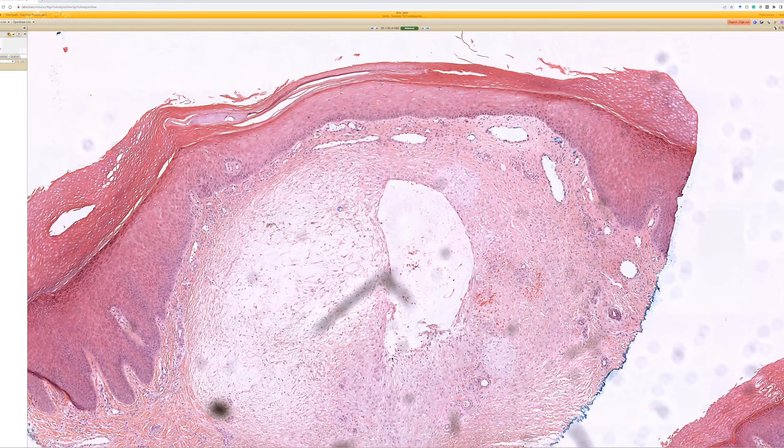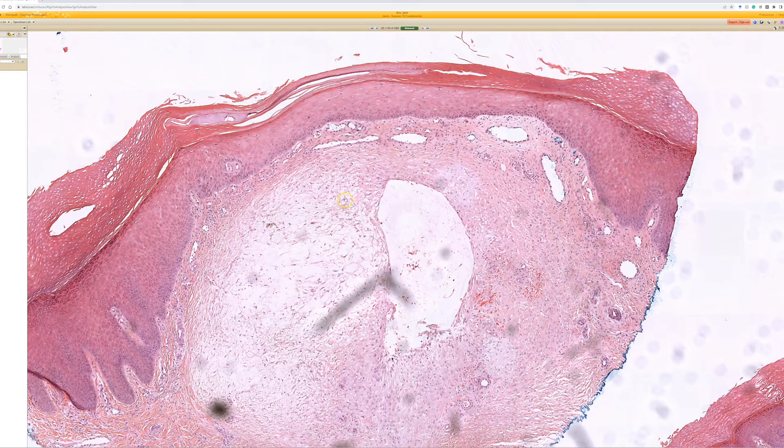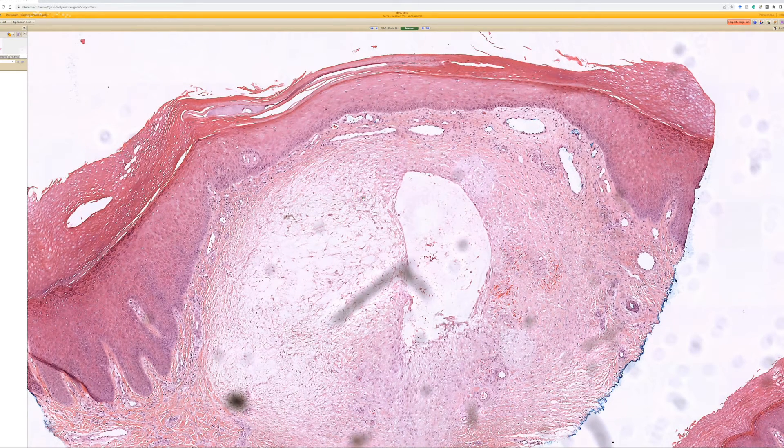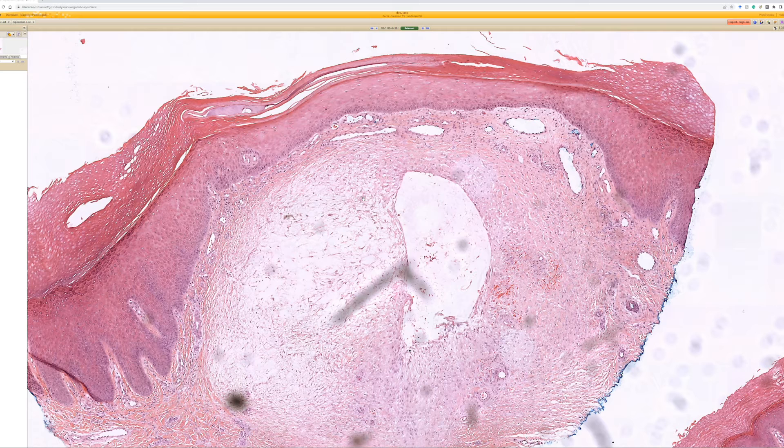So this is digital mucus cyst, digital mucoid cyst, whichever you like to call them. And they are little clearish papules that arise on the proximal nail fold, the dorsal surface where the skin meets the nail. For anyone watching online who's not familiar, you can Google that terminology to see. But that's the site where these arise.